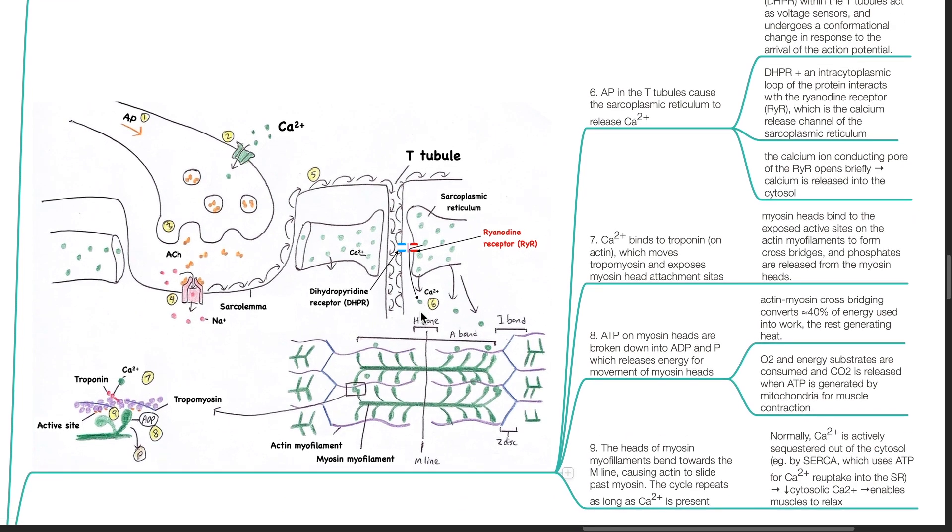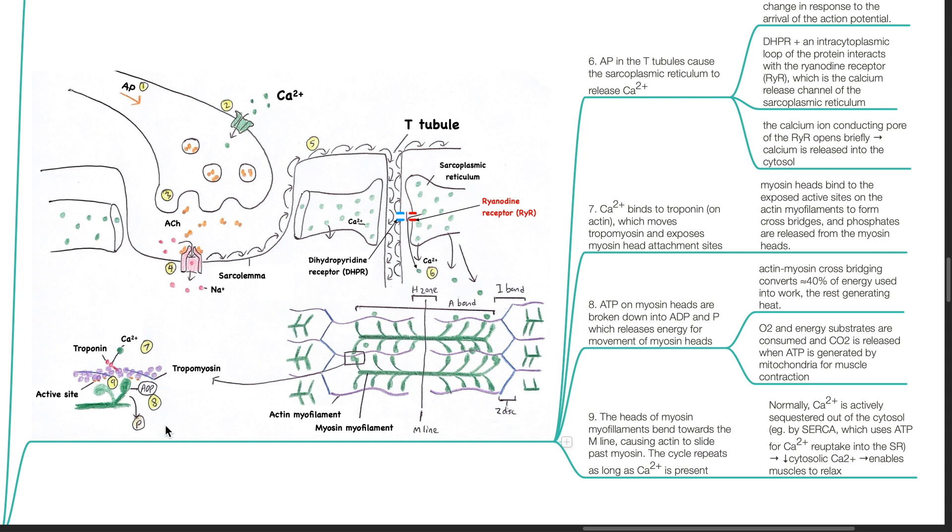Calcium binds to troponin on actin which moves tropomyosin and exposes the myosin head attachment sites. Myosin heads bind to the exposed active sites on the actin myofilaments to form cross bridges and phosphates are released from the myosin heads. ATP on myosin heads are broken down to ADP and phosphate which releases energy for movement of the myosin heads. Actin-myosin cross bridging converts about 40% of energy used into work while the rest is used to generate heat.